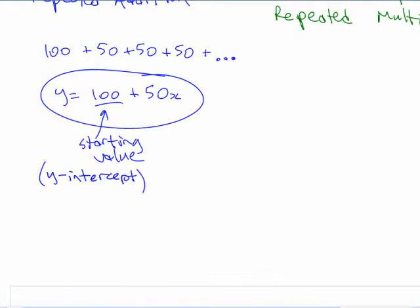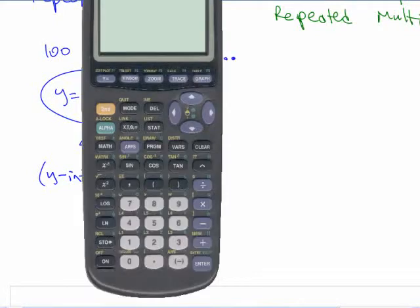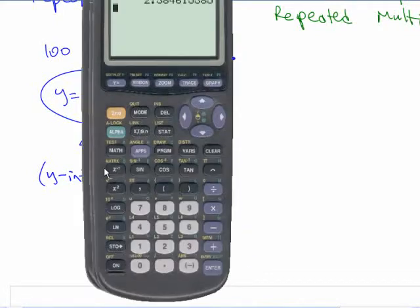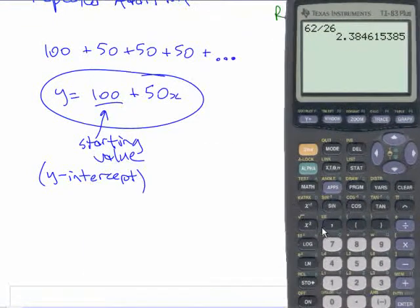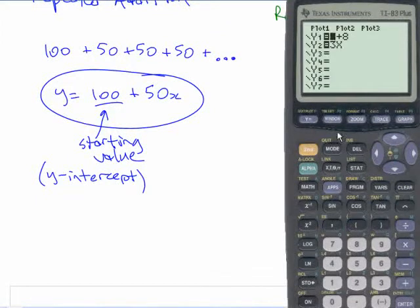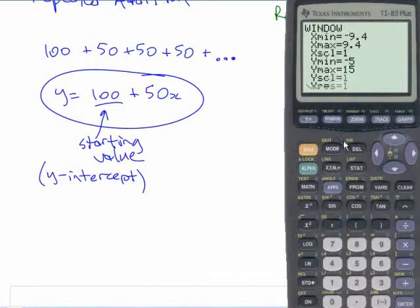If we try and draw a graph of that thing, let's use a calculator because that's the technology you have probably in front of you. Okay, get rid of those two equations. We got 100 plus 50x. If I set up the window, probably I'm going to go from negative 2 up to 12 or something. That's good enough.